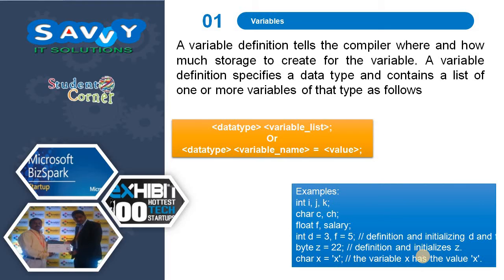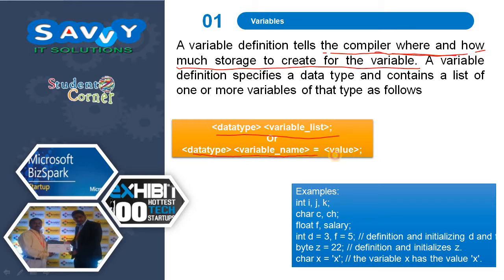A variable definition tells the compiler where and how much storage to create for a variable. A variable definition specifies a data type and contains a list of one or more variables of that type. The syntax is: data type, variable list — or — data type, variable name = value.